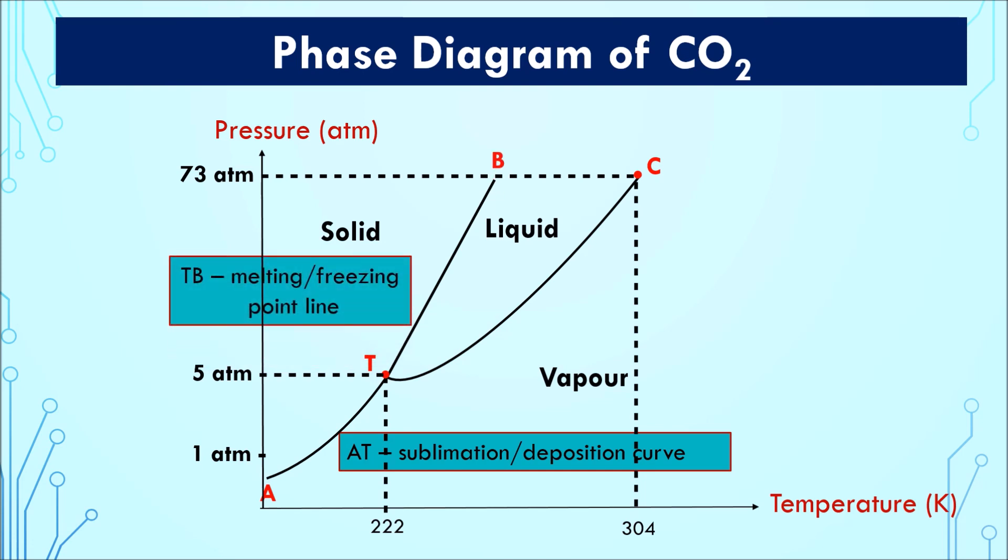Next, TB line, the melting or the freezing point line. Here, solid carbon dioxide is in equilibrium with liquid carbon dioxide. Finally, curve TC which is the boiling point curve. Here, liquid carbon dioxide is in equilibrium with vapour carbon dioxide.